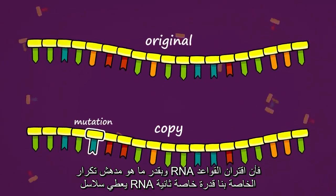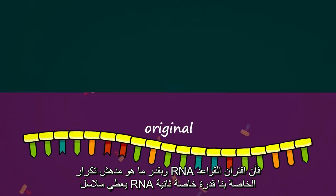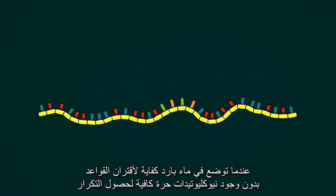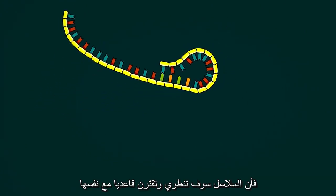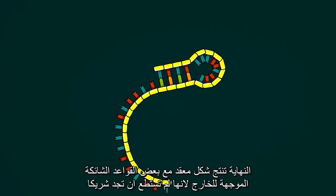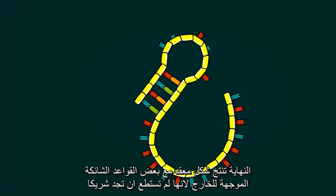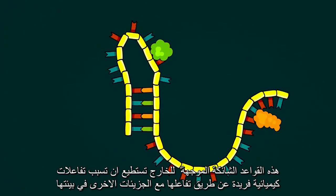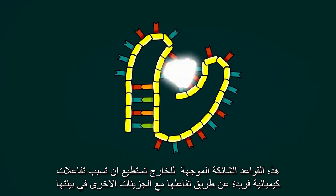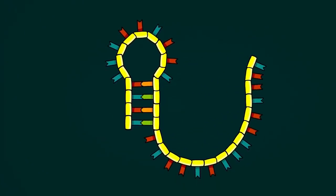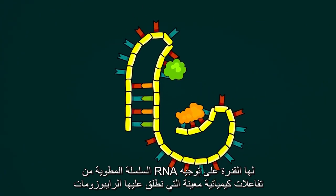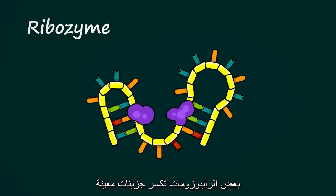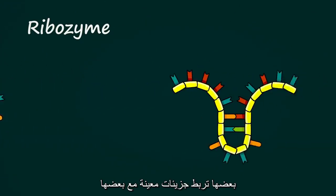As amazing as replication is, base pairing also gives RNA chains a second special ability. When placed in water cool enough for base pairing but without enough free nucleotides for replication, chains will fold up and base pair with themselves. The end result is a complex shape with certain sticky bases pointing outward because they weren't able to find partners. These sticky, outward-facing bases can cause unique chemical reactions by interacting with other molecules in their environment. A folded chain of RNA capable of guiding a specific chemical reaction is what we call a ribozyme. Some ribozymes break certain molecules apart; others join certain molecules together.